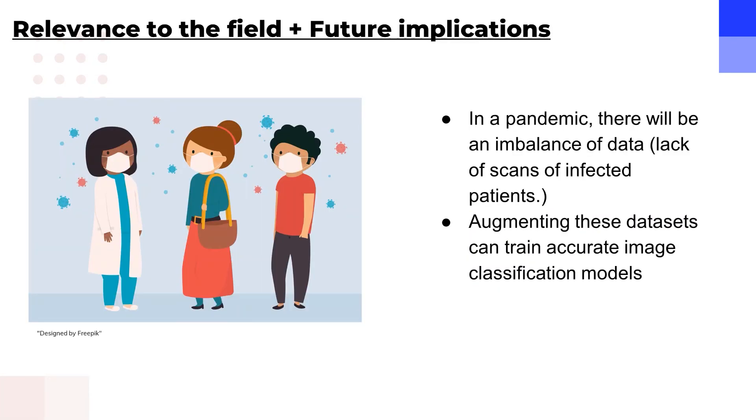Our research has great relevance especially in the COVID-19 pandemic. In the early stages of a future pandemic, there will be an imbalance of data due to the lack of scans of infected patients. Augmenting these datasets can help train accurate image classification models, which can be critical in assisting doctors in slowing the pandemic in its early stages.